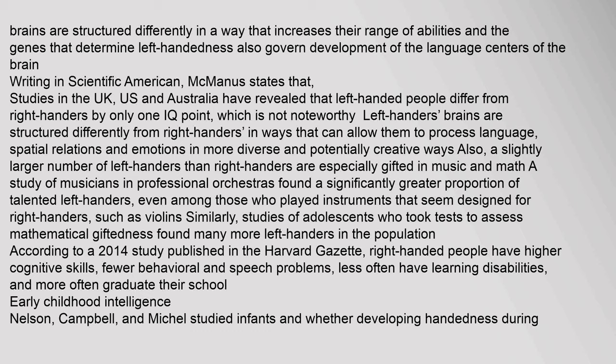Writing in Scientific American, McManus states that studies in the UK, US, and Australia have revealed that left-handed people differ from right-handers by only one IQ point, which is not noteworthy. Left-handers' brains are structured differently from right-handers in ways that can allow them to process language, spatial relations, and emotions in more diverse and potentially creative ways. Also, a slightly larger number of left-handers than right-handers are especially gifted in music and math. A study of musicians in professional orchestras found a significantly greater proportion of talented left-handers, even among those who played instruments designed for right-handers, such as violins.